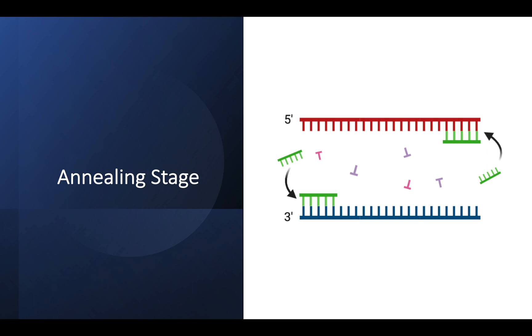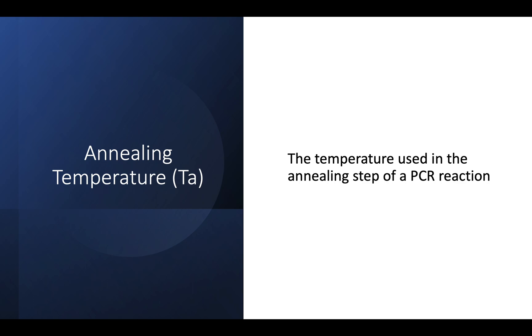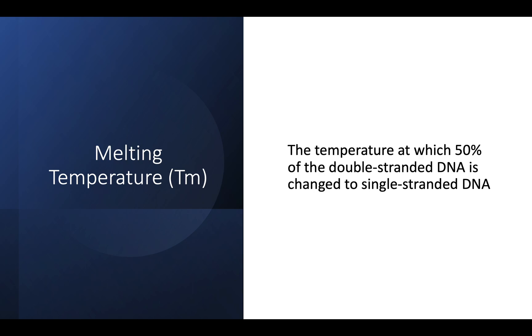We're going to focus on the annealing stage of the PCR reaction. In the annealing stage of standard PCR, the primers bind to our target sequence, and this binding of a primer to the template DNA serves as the starting point for DNA amplification. The annealing temperature is what actually determines the specificity of primer annealing. Annealing temperature is the temperature that is used in the annealing step of a PCR reaction, and is highly dependent on the melting temperature of primers. The melting temperature is the temperature at which 50% of the double-stranded DNA is changed to single-stranded DNA.